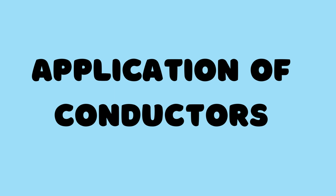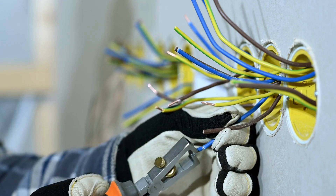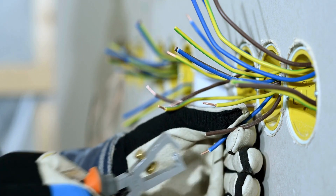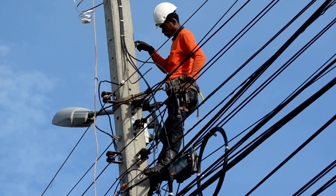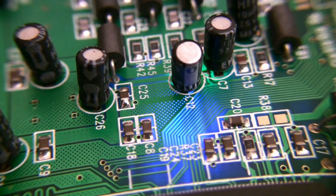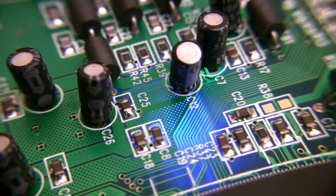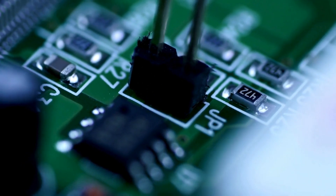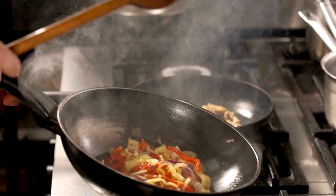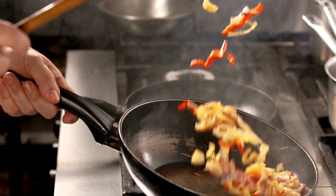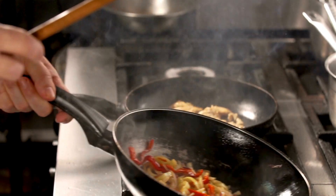Now we learn some applications of conductors. Electrical wiring: copper and aluminum wires are used in homes and industries. Electronic circuits: various conductive materials are used in making circuit boards. Cooking utensils: metal pans and pots conduct heat efficiently for cooking.